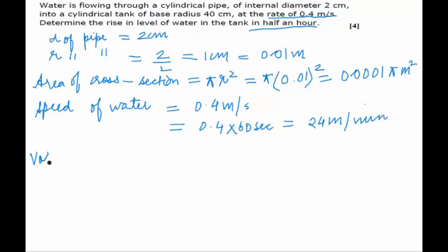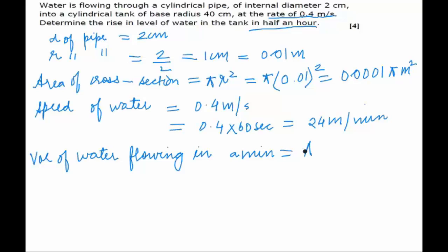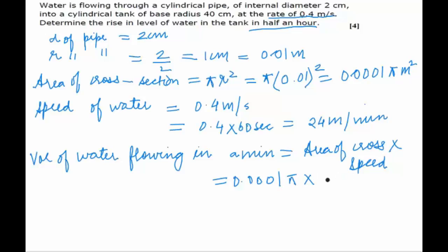So the volume of water flowing through this pipe per minute will be equal to the area of cross section multiplied by the speed per minute, which equals approximately 0.0001π into 24 meters cubed per minute. This works out to approximately 0.00754 meters cubed per minute.